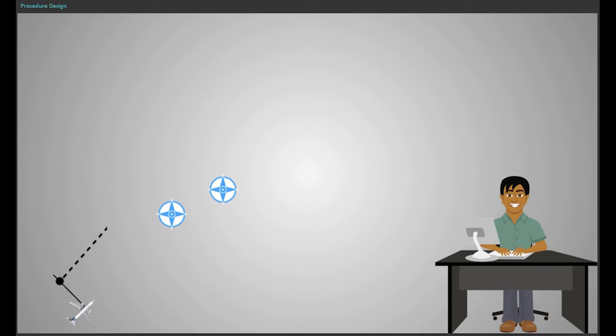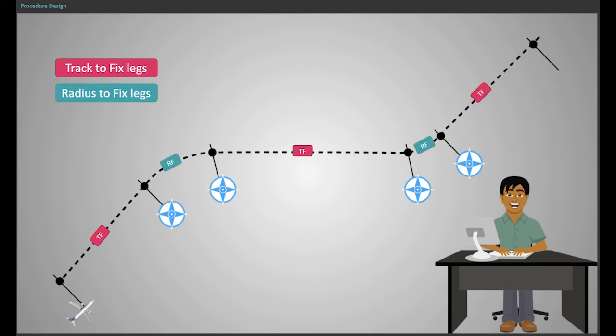Due to the higher accuracy, NAVBLUE design criteria for RNP-AR procedures recommend the use only of track-to-fix and radius-to-fix legs. The resulting trajectory is an accurate geographic and repeatable trajectory.